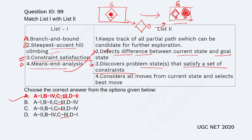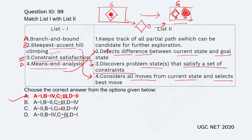Steepest ascent hill climbing considers all moves from the current state and selects the best one. Branch and bound keeps track of all paths that can be candidates for further exploration — it checks all branches and finds which ones are possible.